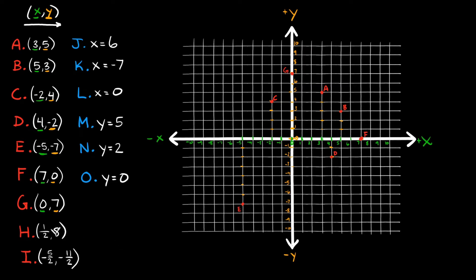Now let's try plotting some fractions. Point H is at (1/2, 8). We move one-half space in the x-direction and eight spaces in the y-direction. Starting from the origin, we go half a space in the x-direction — right between 0 and 1 — and then up eight spaces: 1, 2, 3, 4, 5, 6, 7, 8. So this point is point H at (1/2, 8).